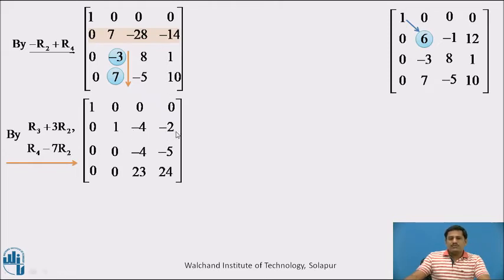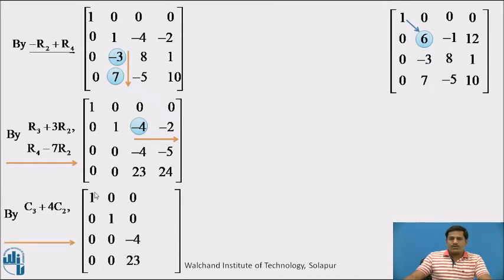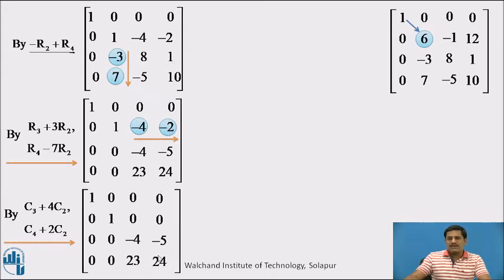Now we reduce the two elements to 0 using column number 2. As zeros are present, the other columns are not going to change. Writing a suitable column transformation for minus 4: apply C3 plus 4C2. There is no change in the first two columns; in column 3 the second entry reduces to 0 and remaining entries are as is. The next entry is minus 2, so we use C4 plus 2C2 — this entry reduces to 0 and the other entries remain.